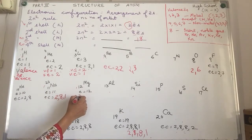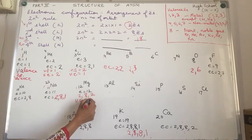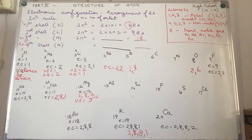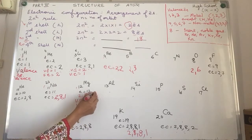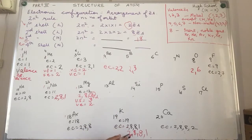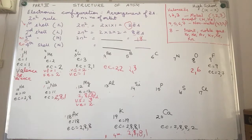For magnesium with configuration 2, 8, 2: the valence shell is the third one (last filled), and valence electrons are 2. For potassium with configuration 2, 8, 8, 1: the valence shell is the fourth, and valence electrons are 1.